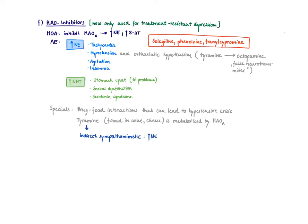An important consideration for MAO inhibitors is drug-food interactions, which can lead to hypertensive crisis. Tyramine, found in many aged foods like wine and cheese, is also metabolized by MAO-A. So if you have an MAO-A inhibitor on board, you're also going to accumulate tyramine. Tyramine is an indirect sympathomimetic that increases norepinephrine. Since you've already increased norepinephrine with the MAO-A inhibitor, adding tyramine increases it even more, and eating foods containing tyramine can lead to hypertensive crisis.